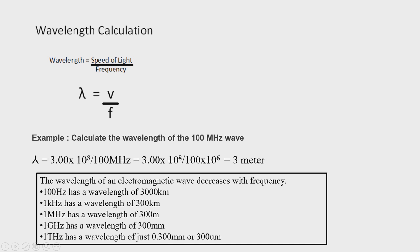Mega means 10⁶, giga means 10⁹, and tera means 10¹². From this table, you can conclude that the wavelength of an electromagnetic wave decreases with increase in frequency. In examinations, you may be given a frequency and asked to calculate the wavelength in meters. You should know conversions: kilo = 10³, mega = 10⁶, giga = 10⁹, tera = 10¹².